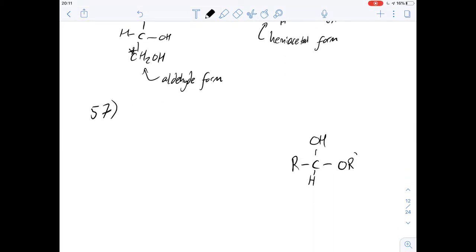So this is question 57. Let's work out what the R groups would be because we've got this general structure of a hemiacetal group here. If we work out what the R groups are, we can work out what the actual structure would be.